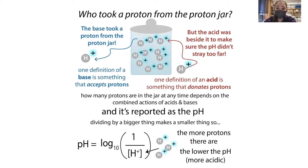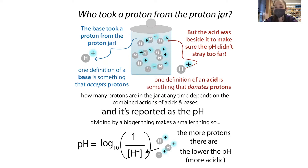pH is the measure of proton availability, and it's an inverse log. The more protons you have, the more acidic you are and the lower the pH. The fewer protons you have, the more basic or alkaline you are and the higher the pH. Because it's a log base 10, for every one pH unit difference, there's a tenfold difference in proton availability. So if you go one pH higher, you have 10 times fewer protons available — it's a deceptive scale because that one unit difference is actually a huge difference in proton concentration.